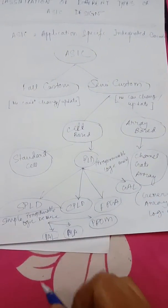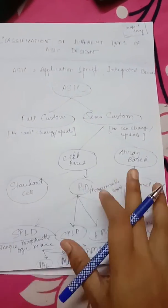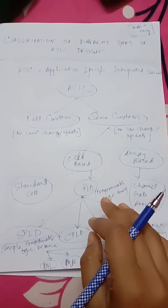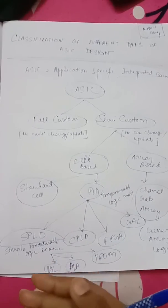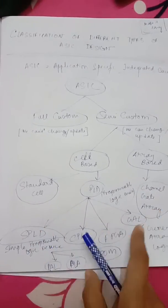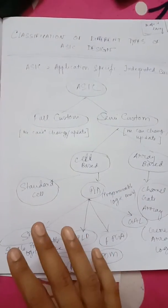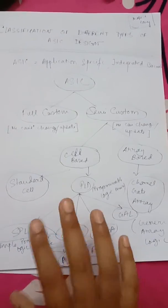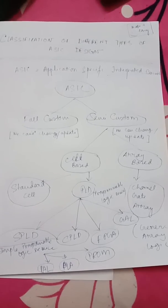SPLD is categorized into three parts: PAL, PLA, and PROM. In this lecture, we learned about the basic classification of different types of ASIC design. In our VLSI course, we have to learn each of them in detail and how to draw circuits using those. But here, we only learned about the classification. Thank you for watching. Hope this was helpful.